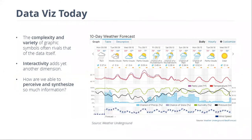If you compare historical data visualization to the types we work with today, it becomes obvious that there's so much more complexity and variety in the graphic symbols we're supposed to understand instantly when we open a page. Not only that, but we can often click on these things and change them because we're using them dynamically in a web browser, which adds a whole other dimension of complexity. So how are we able to perceive all this information using symbols we may have never looked at before?